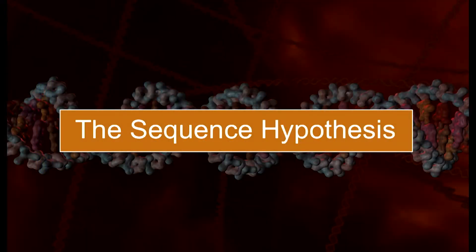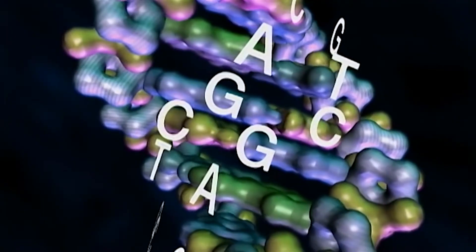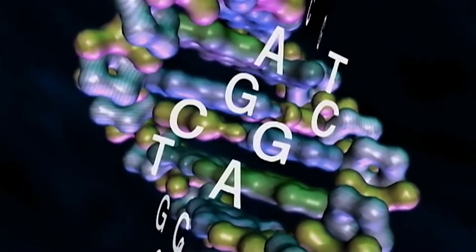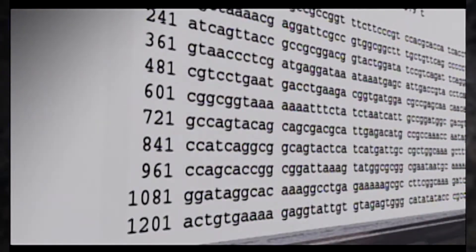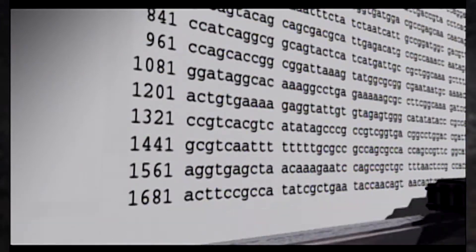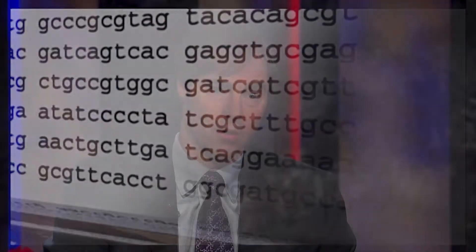In 1957, four years after the structure was discerned, Francis Crick put forward what was one of the most important hypotheses in the history of science. It's called the sequence hypothesis. What Crick proposed was that these four chemicals that chemists represent with the letters A, T, G, and C are actually functioning like alphabetic letters in a written text or like zeros and ones in a section of computer code.